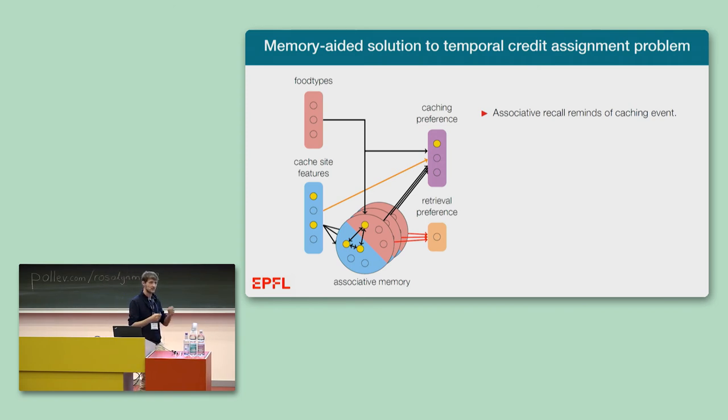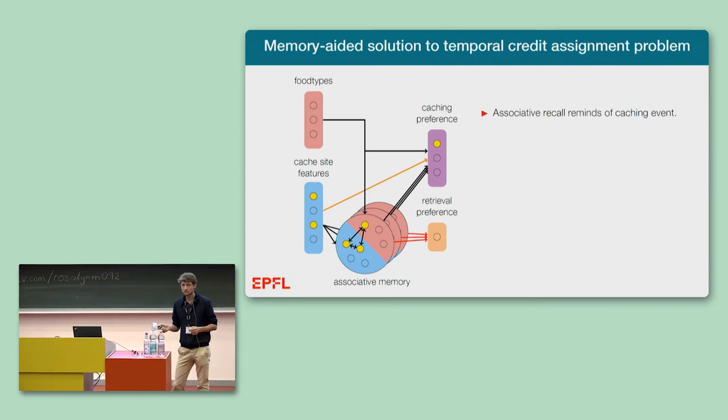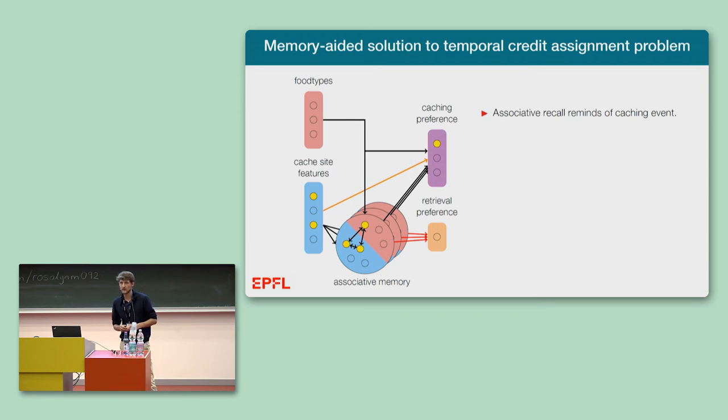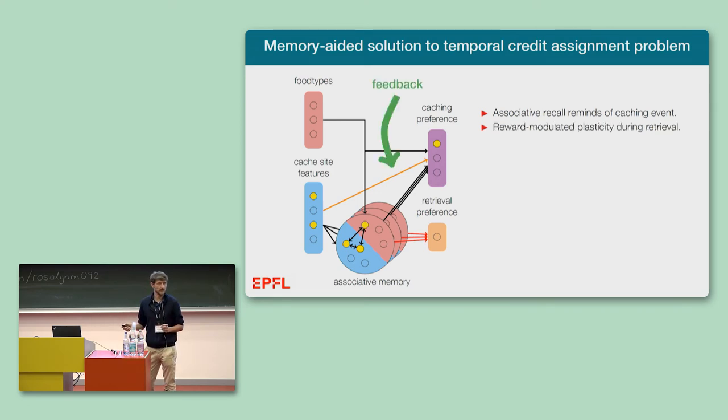The associative memory allows or enables also a new solution to the temporal credit assignment problem in learning the caching policy. Whenever a cache site triggers the associative recall of a certain food type, the system has implicitly available all the information that is needed to know that there must have been a caching event in the past, irrespectively of how long ago this is. And if now, after retrieval, there is some feedback signaling whether this caching action was good or not, it is as if this feedback would have been given immediately after the caching action. So we can just use this simple reward modulated plasticity rule during retrieval to update the caching policy.